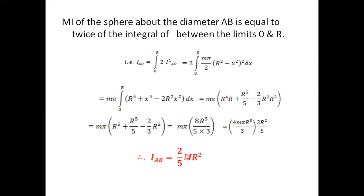Taking that value as M, we get the moment of inertia of the solid sphere about its diameter AB: I_AB = 2/5 MR². Comparing this with the general expression I = mk², the radius of gyration in this case is k = √(2/5) · R. This is the moment of inertia of the solid sphere about its diameter.